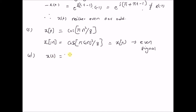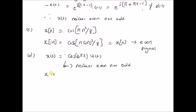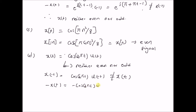Now let us look at another signal: x(t) = cos(2πt)·u(t). We know that cos(2πt) is an even signal and u(t) is neither even nor odd. So the product is also neither even nor odd, because x(−t) = cos(2πt)·u(−t), and since u(t) is neither even nor odd, this product is not equal to x(t). Also, −x(t) = −cos(2πt)·u(t), so x(−t) ≠ −x(t). Therefore, x(t) is neither even nor odd.